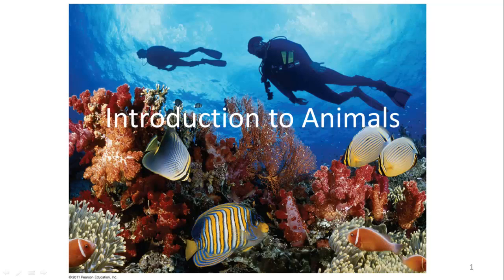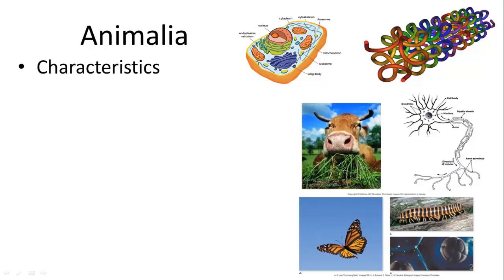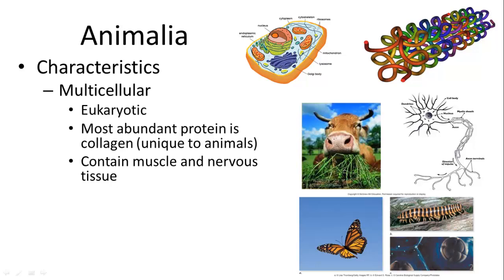How do we define what an animal is? There are many characteristics, all of which seem to have some exception, but generally these are the ones we use. First, they are multicellular — and to be multicellular you also have to be eukaryotic, so there are no prokaryotic multicellular organisms. Animals also have a unique protein structure called collagen, which is a supportive structure found in many tissues.